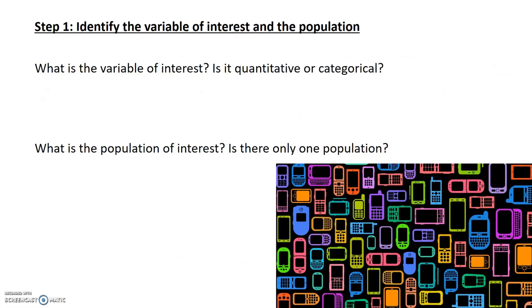To start, we need to identify the variable of interest and the population. The first question you should ask yourself: what is the variable of interest and is it quantitative or categorical? For our example, SAR level is what we're recording on every cell phone and it is a numerical measure, so our variable of interest is quantitative.